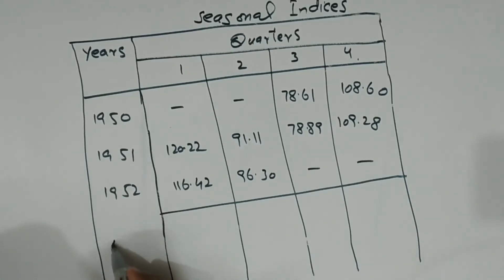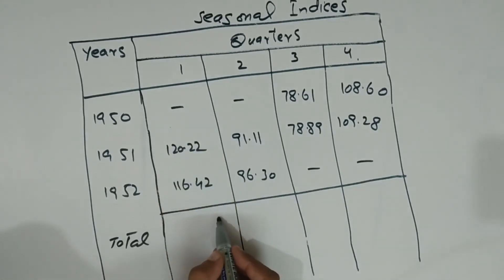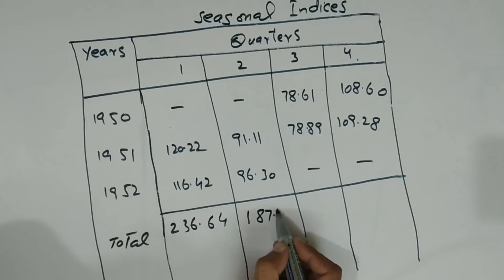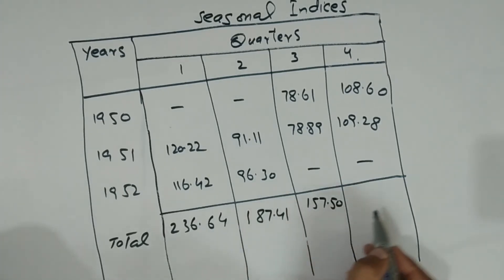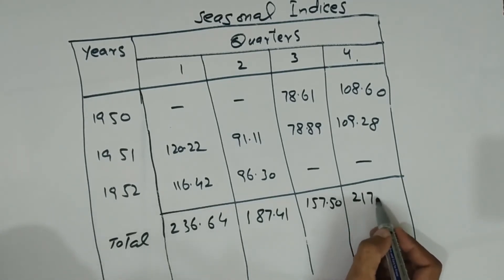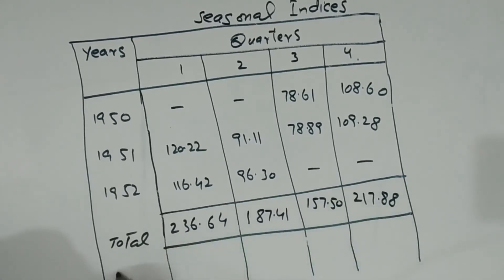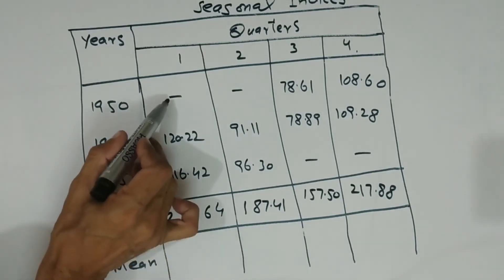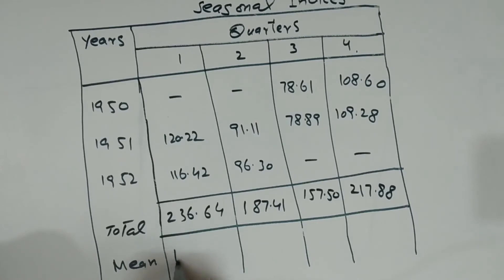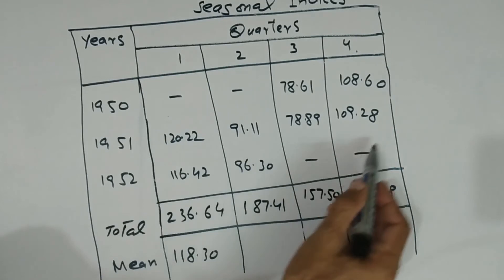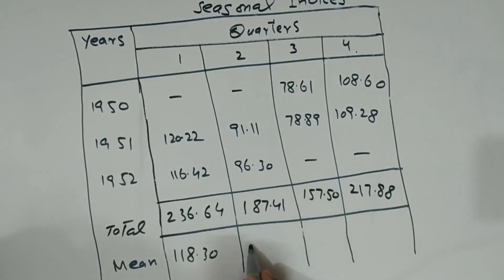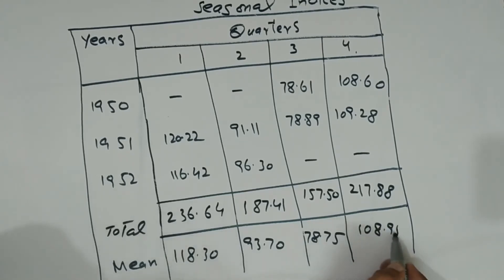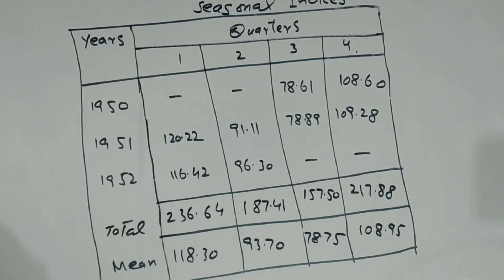Now we find the total of these seasonal index values. The totals come out as: 236.64 for one quarter group, 187.41 for another, 157.50, and 217.88. After finding the totals, we calculate the mean average. Since some values are skipped, we divide by 2, giving us 118.30 for the first quarter, and similarly for others. The means come out as: 118.30, and the next is 108.95.